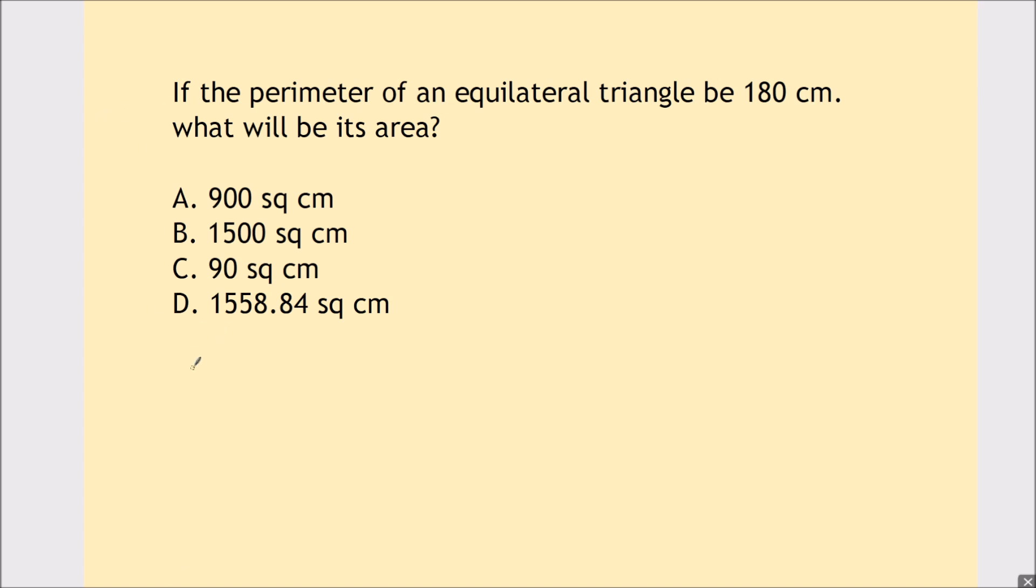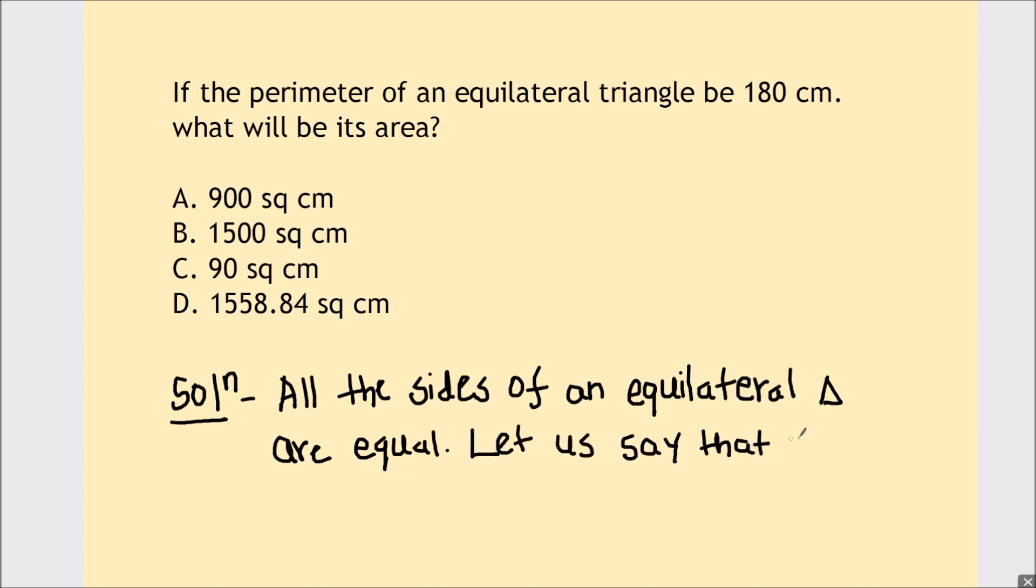We have been given the perimeter of the equilateral triangle and we know that the equilateral triangle is a triangle with all of its sides equal. So as all the sides of the equilateral triangle are equal, let us say that the side be a cm.